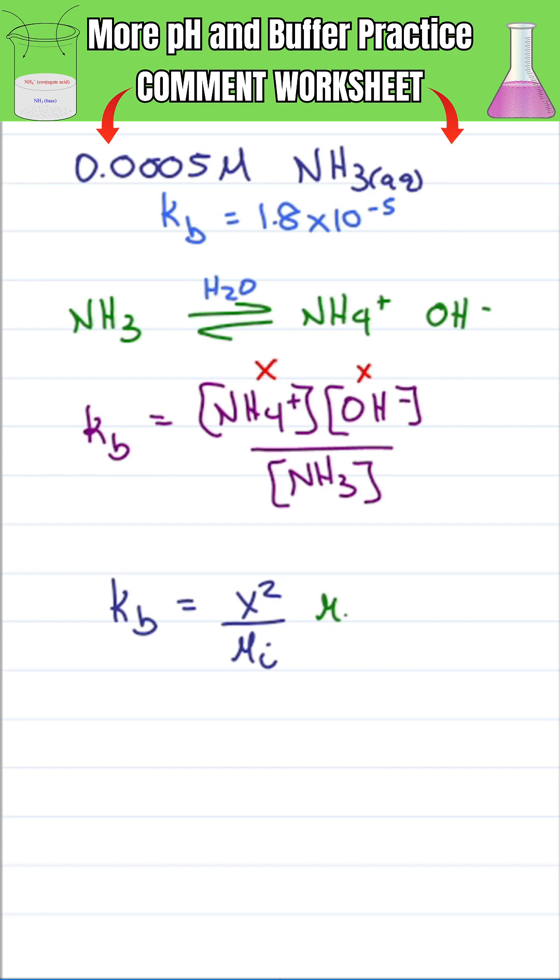To solve for X, I multiply both sides by molarity. Then I take the square root of both sides to give me that X is equal to the square root of the initial molarity times Kb.